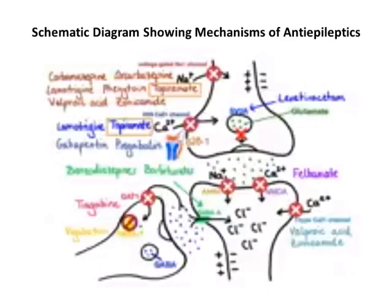The SV2A proteins found in the walls of the glutamate-containing vesicles can be impaired by levetiracetam. By impairing the synthesis and release of these SV2A proteins, levetiracetam impairs the synthesis and release of glutamate — the excitatory neurotransmitter responsible for excitation of neurons. Topiramate also inhibits NMDA (N-methyl-D-aspartate) receptors, which are responsible for the influx of calcium ions.